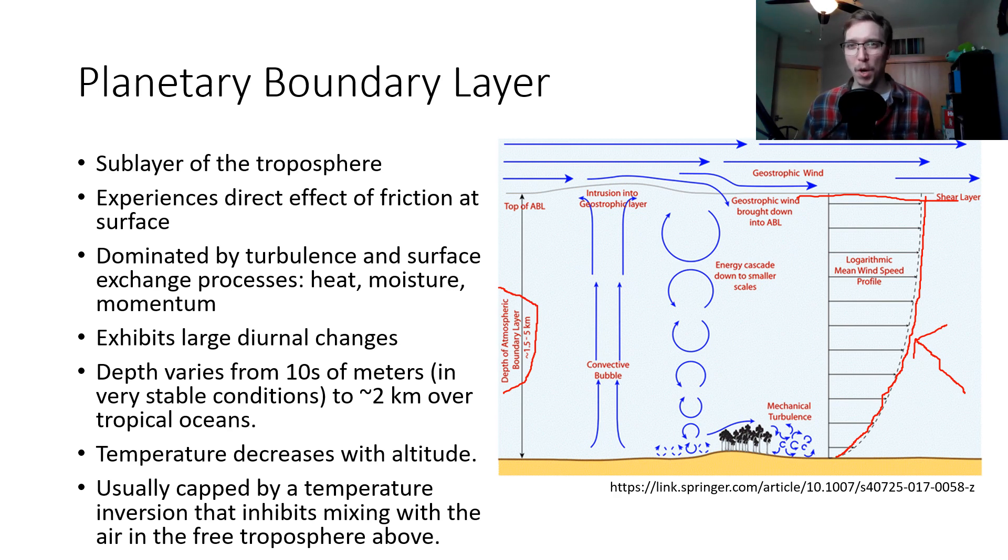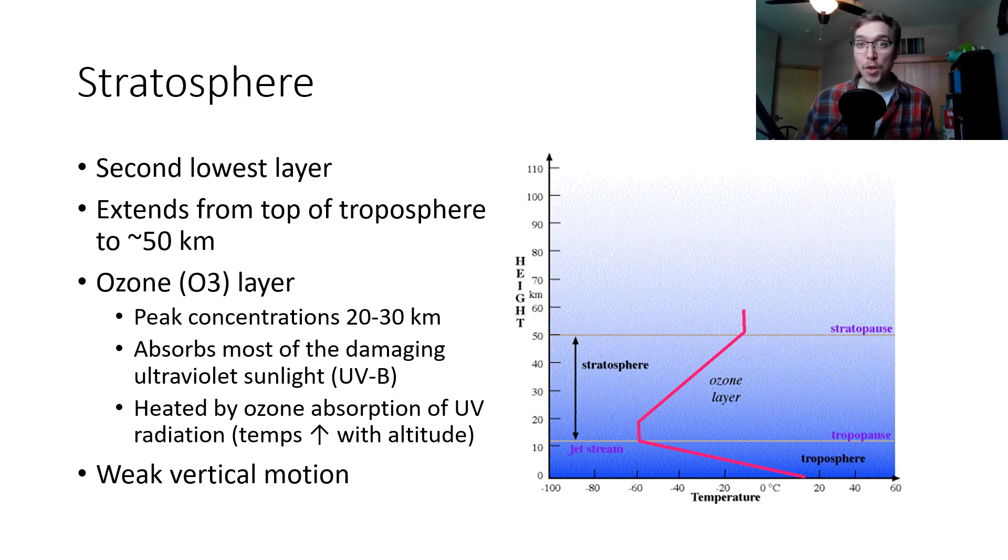Getting into the stratosphere, that's our next sphere, above the troposphere and the tropopause. This is the second lowest layer that extends from the top of the troposphere to about 50 kilometers. This is our ozone or O3 oxygen three layer. Peak concentrations of ozone within the stratosphere are right around between 20 and 30 kilometers of altitude. Now this is incredibly important because ozone absorbs most of the damaging ultraviolet sunlight or UVB radiation that is encountered by our planet. This entire layer is heated by ozone absorption of UV radiation, so temps will increase with altitude here. There is weak vertical motion, that means there's not lots of upwelling and updrafts occurring within the stratosphere here.